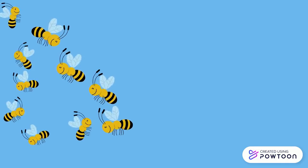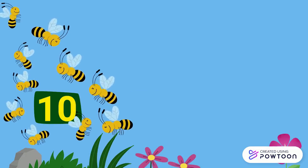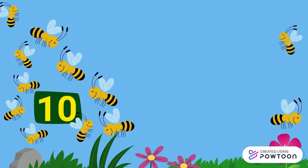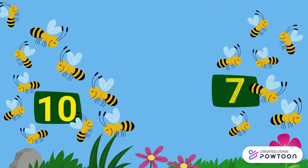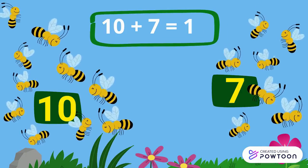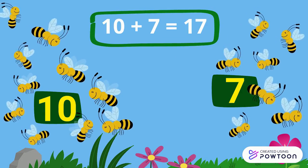10 bees absorbed the honey from the flowers, and also 7 other bees came. So 10 plus 7 equals 17.